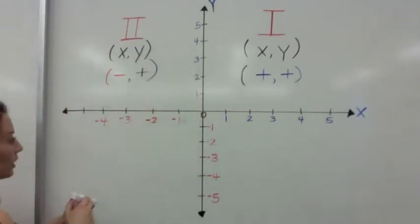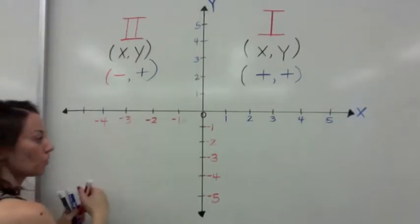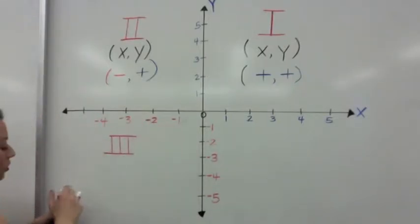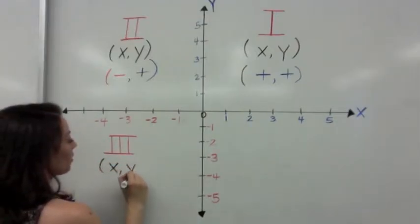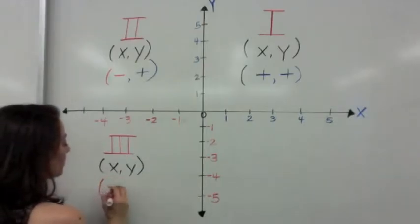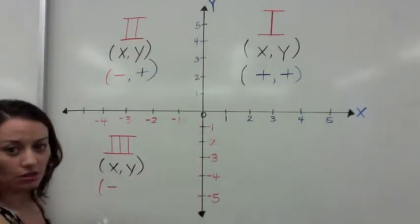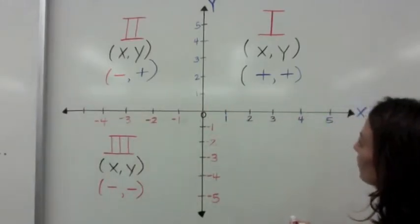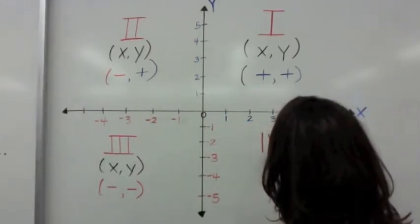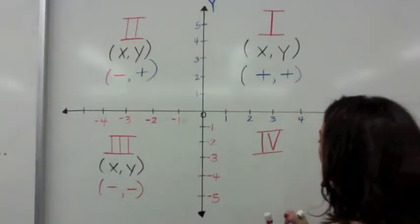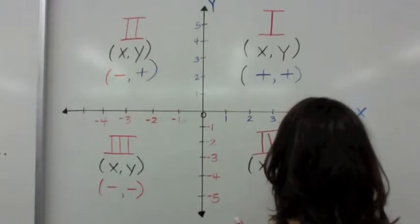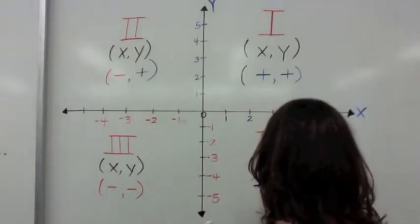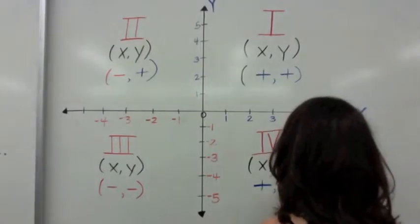Now we're going to go down to the left and we're going to be in quadrant three, Roman numeral III. The x values are negative, and the y values are also negative — so negative, negative. The last quadrant is quadrant four, written as IV in Roman numerals. The x coordinate is going to be positive, and the y is going to be negative.